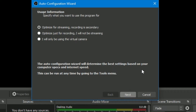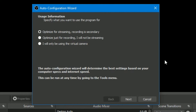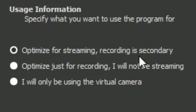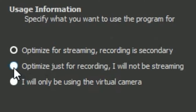Once you click Finish you can see the Auto Configuration Wizard. It asks what you want to use the program for: 'Optimize for streaming, recording is secondary,' 'Optimize just for recording,' or 'I will not be streaming, I will only be using the virtual camera.' If you prefer only to record Google Meet, select 'Optimize just for recording.'